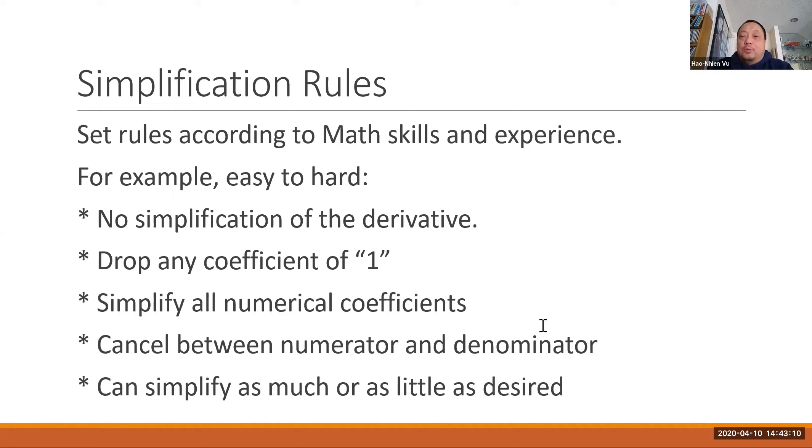You can move in one more step and cancel between numerator and denominator. So in that case, for your friend's derivative, the axes would cancel and you just have a 2. And then to make it very hard, you're totally allowed to simplify anything you want. You can make rules as you go along.